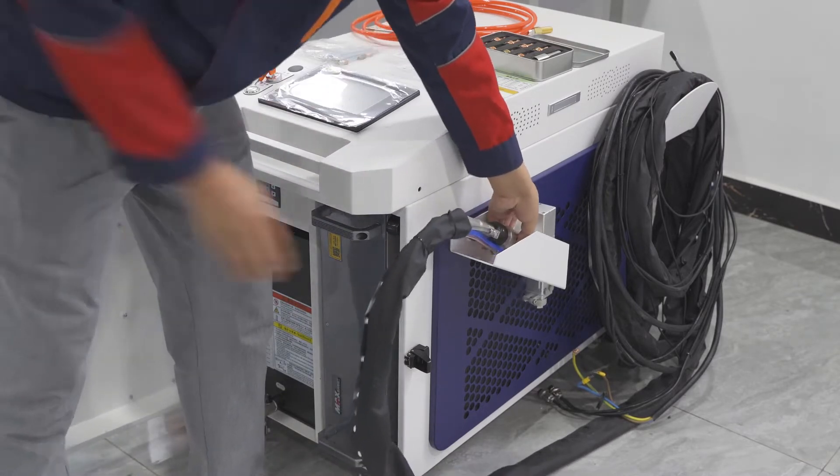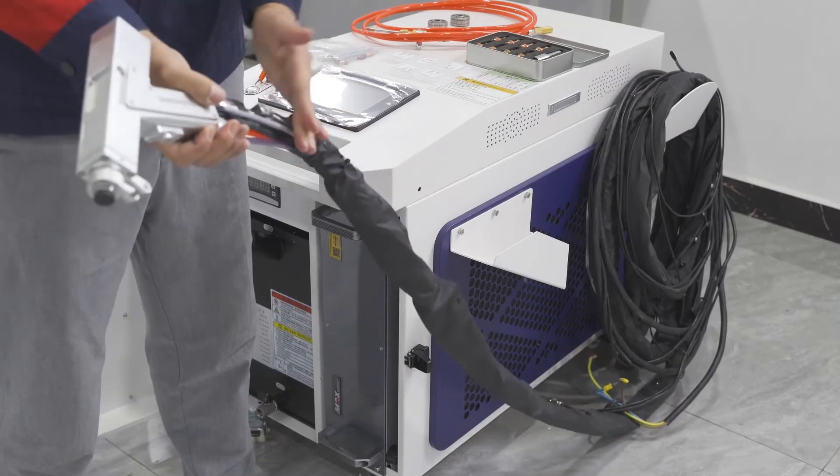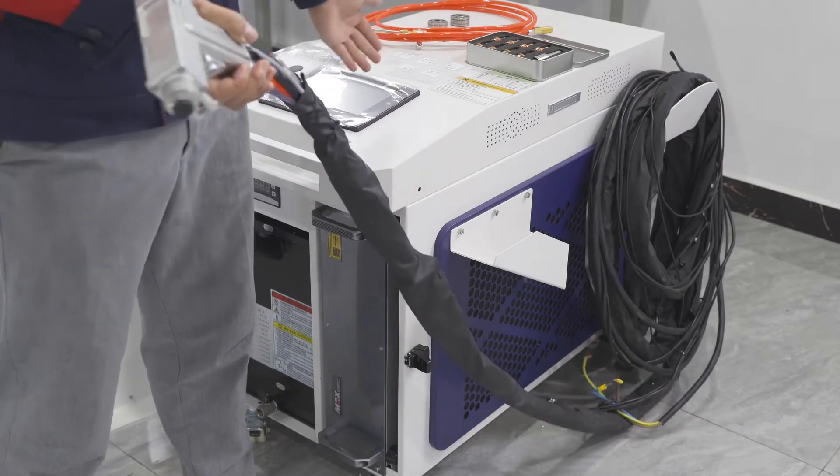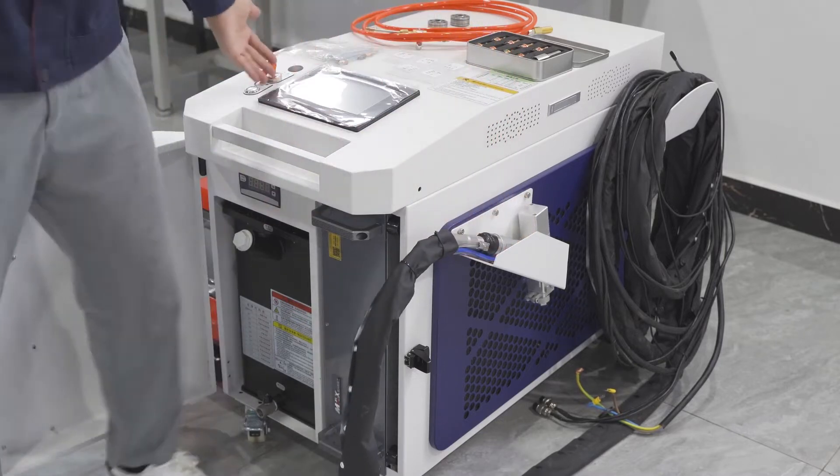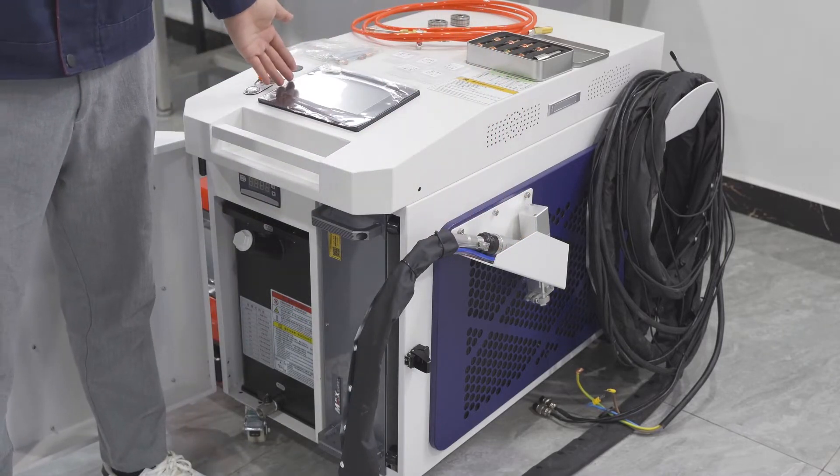This is the laser gun. The laser gun is connected with the fiber cables to the machine. This is the torch screen and the operation system.